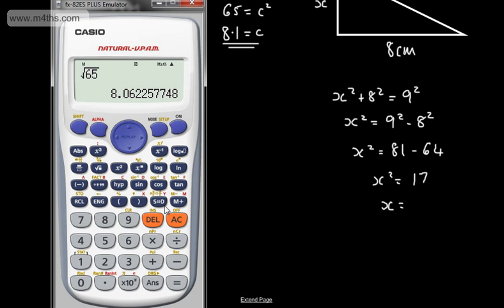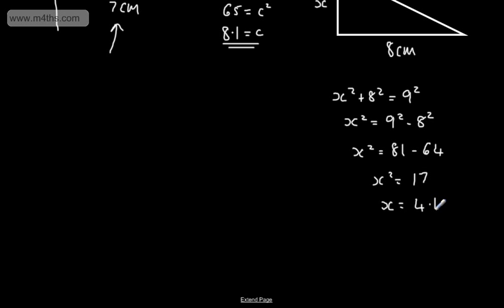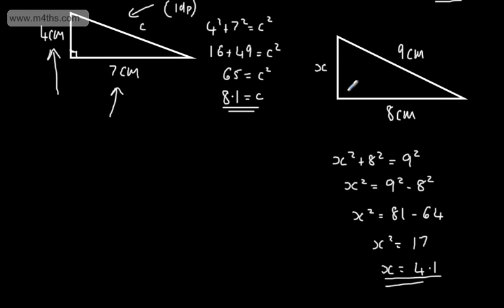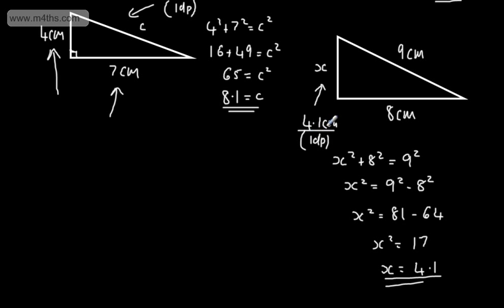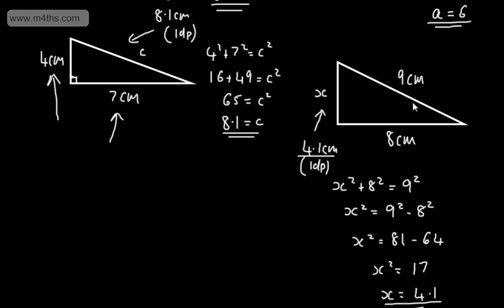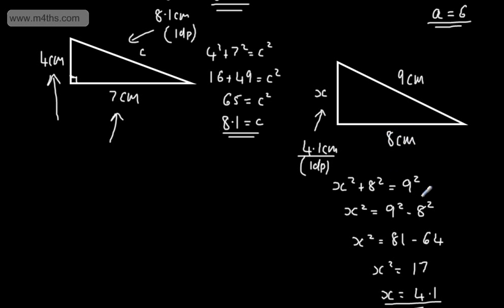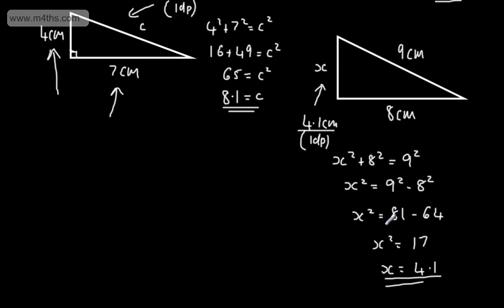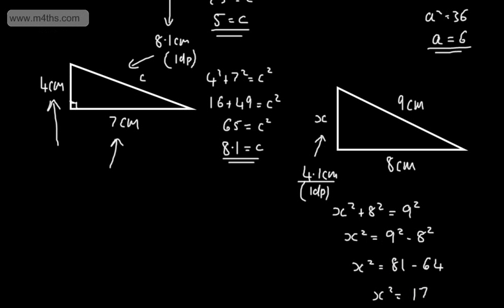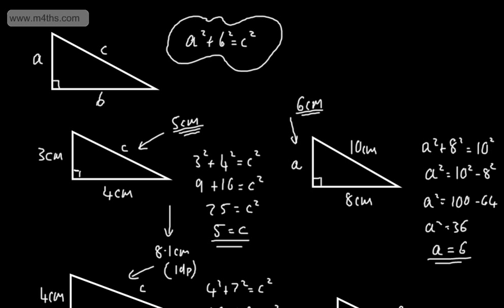The square root of 17 is a bit over 4. Using a calculator, we get 4.1 to one decimal place. So this length is 4.1 centimetres, to one decimal place. Remember, the two shorter sides must each be shorter than the hypotenuse. All I've done is said 9 squared minus 8 squared equals x squared, then taken the square root. These are quick worked examples of using Pythagoras' theorem to find a missing length in a right-angled triangle.